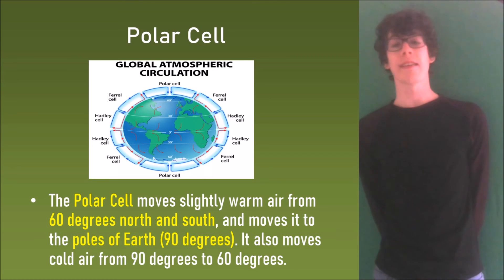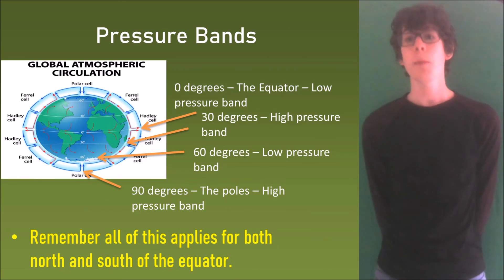And finally the polar cell moves slightly warm air from 60 degrees north and south and moves it to the poles of the Earth and these are at 90 degrees at the top and bottom. It also moves cold air from 90 degrees to 60 degrees. Now remember all of this applies for both the north and the south of the equator and you can see that here. The top and the bottom have all three of those cells.